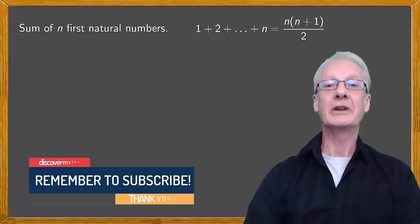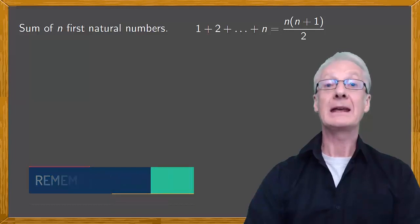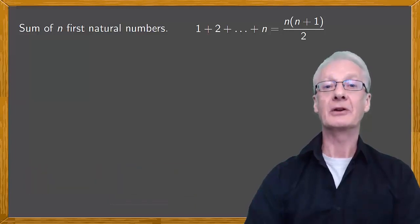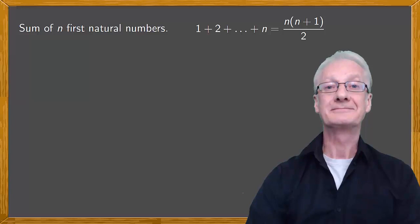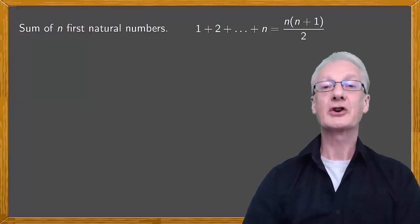There are different ways of proving the formula for the sum of the first n natural numbers. It can be done using the formula for the sum of the terms of an arithmetic progression. But here we'll demonstrate it by induction.